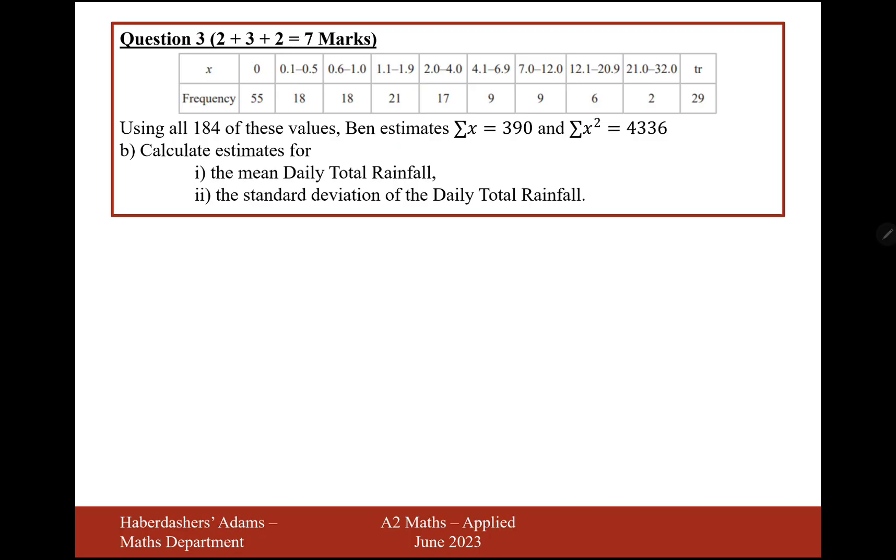So using all 184 of these values, Ben estimates that the sum of X is 390 and the sum of X squared is 4,336. Calculate estimates of the daily mean and the standard deviation. For the mean, it's the sum of X over N, which is 390 over 184. Let's do that on the calculator: 390 divided by 184 is 2.12 millimeters.